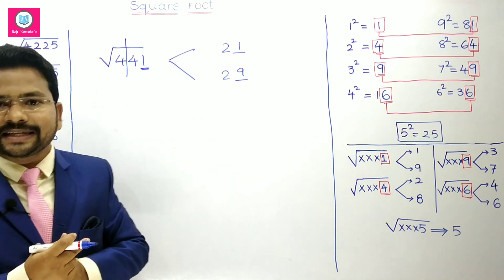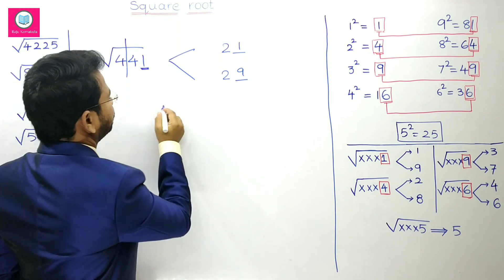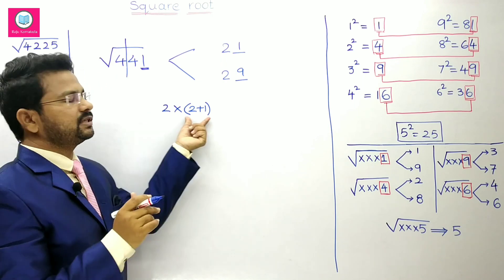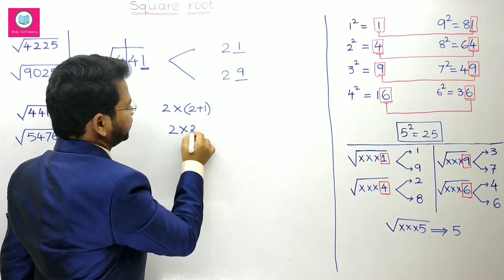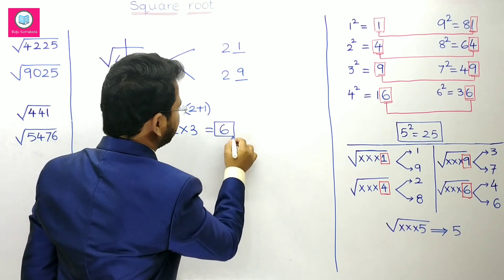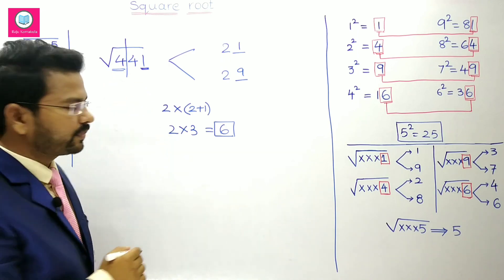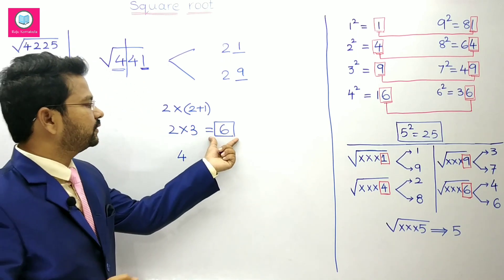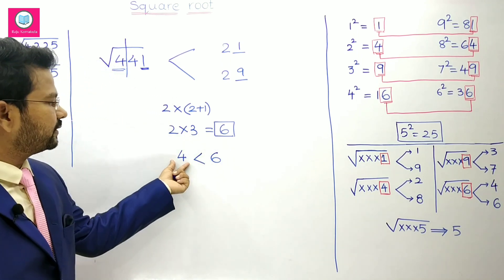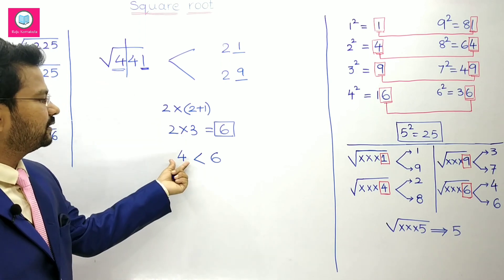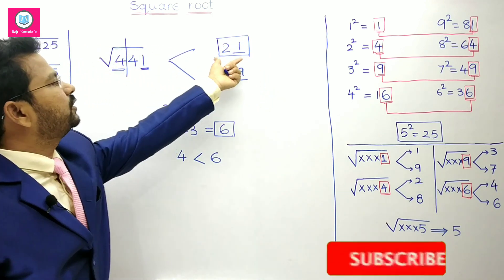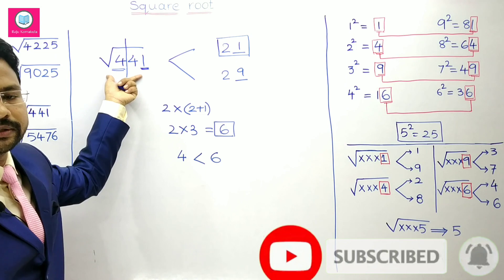To find the exact number, we multiply 2 by the next number: 2 into 3 equals 6. Now compare this product 6 with the number in the square, which is 4. Since 4 is less than 6, you take the smaller number. Therefore 21 is the square root of 441.